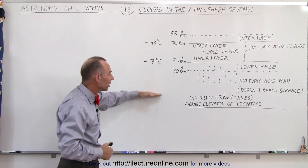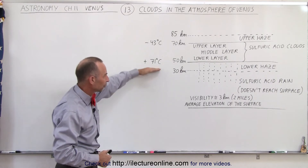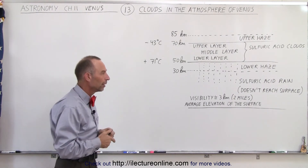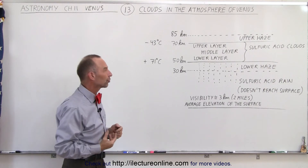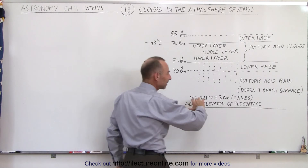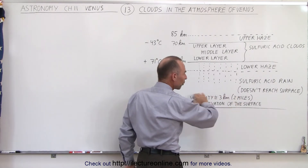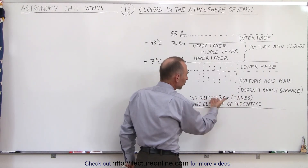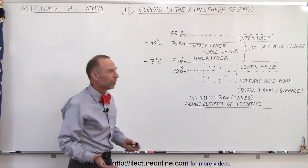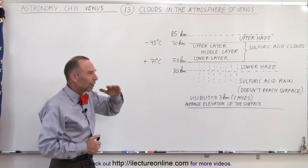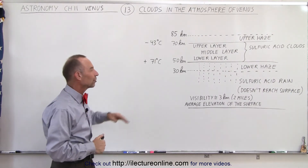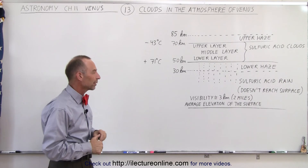Below the lower haze, it becomes clear. For about 20 miles or 30 kilometers, we have a relatively clear atmosphere where you can see through. But so little light filters through those thick cloud layers that visibility is quite poor even at the surface — assumed to be about three kilometers, or about two miles. It's kind of like driving around at dusk and seeing shadowy regions; you don't see things very clearly.